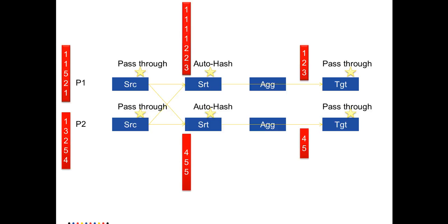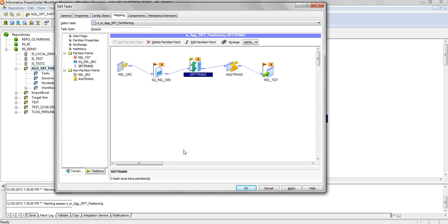If you make the partition point on the Sort transformation use auto hash, as soon as data arrives at the Sort transformation it will be redistributed. Data belonging to the same group will be clubbed into a single partition. For example, 1, 1, 1, 2, 2, and 3 are clubbed into the first partition after the partition point, then passed to the Aggregator. The target result is the same as what we obtained without multiple partitions.